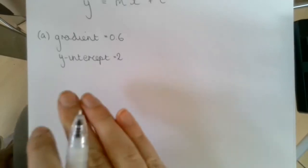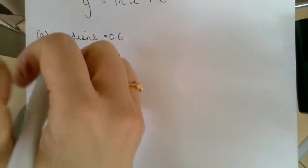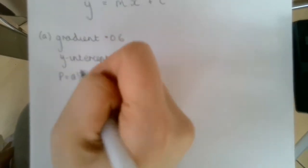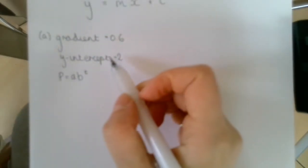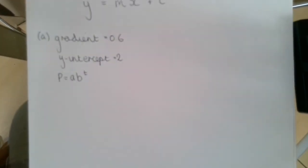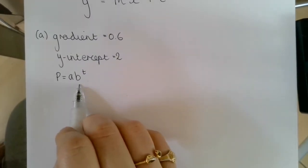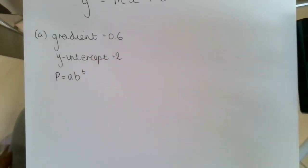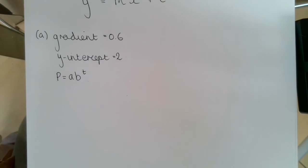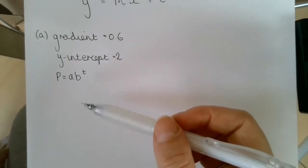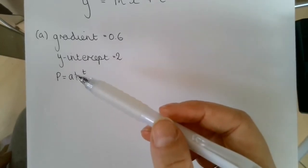It says a scientist suggests that this growth can be modeled by the equation p equals ab to the power of t. So we've been told that it can be modeled like this in a non-linear relationship, which means we can draw a straight line to represent this relationship using logarithms.